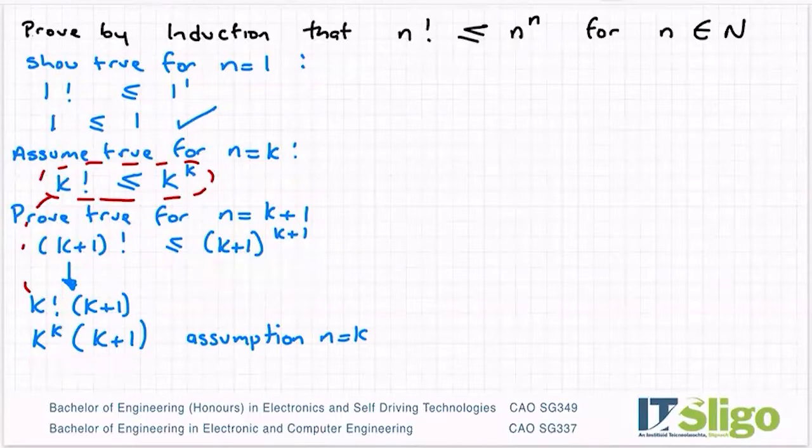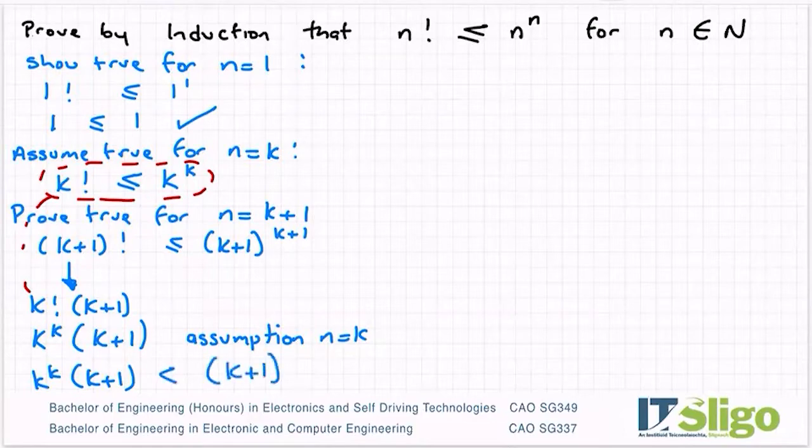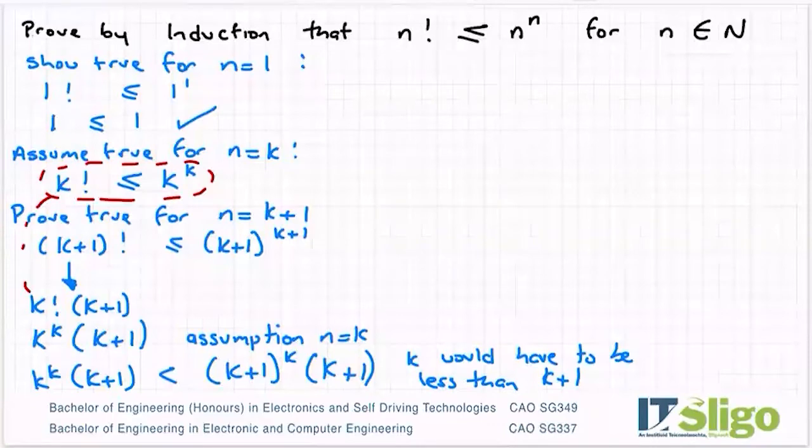And I'm going to say now that k to the power of k by k plus 1, what I have written there on the left, has to be less than k plus 1 to the power of k times k plus 1. So what did I do there? Well, I'm saying k would have to be less than k plus 1, because remember we're working with natural numbers, so they're going up. So I need to make it look like this side. So I'm saying therefore that k to the power of k has to be less than k plus 1 to the power of k. I didn't change anything else. I'm just making that statement.